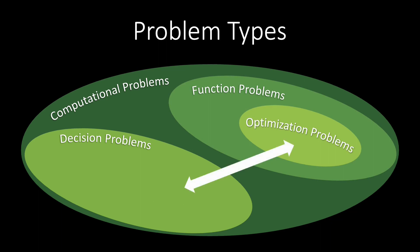In the decision version of a maximization problem, we choose a value k and ask if there exists a feasible output that has a quality of at least k. In the decision version of a minimization problem, we ask if there exists a solution that has quality at most k.